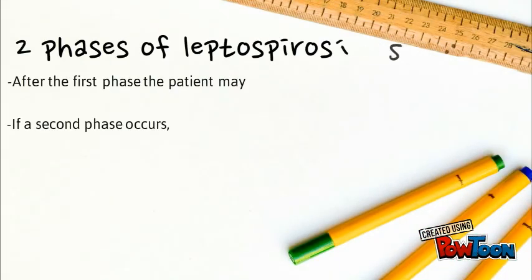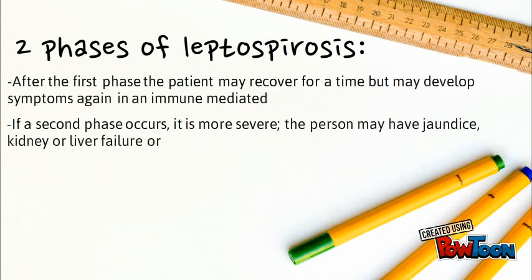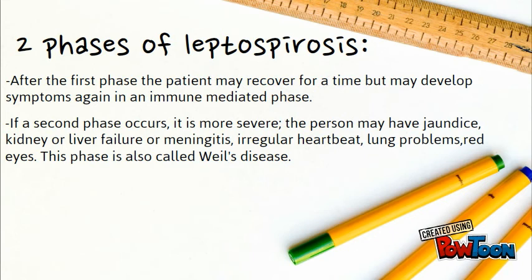There are two phases of Leptospirosis. After the first phase, the patient may recover for a time but may develop symptoms again in an immune-mediated phase. If a second phase occurs, it is more severe, and the person may have jaundice, kidney or liver failure, or even meningitis, irregular heartbeat, lung problems, and red eyes. This second phase is also known as Weil's disease.